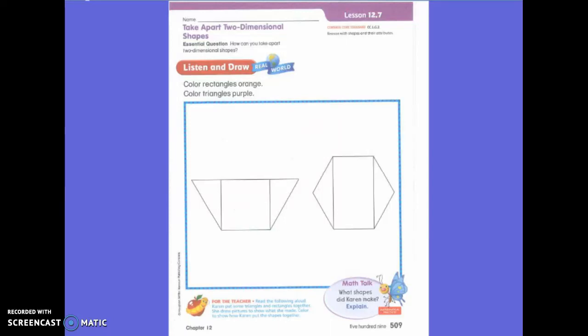In math, we've been working on putting shapes together to make new shapes. It's been kind of fun to be able to see new shapes form. So today we are going to be given a shape, but we're going to have to draw lines to see what shapes were used or put together to make that shape. Karen put some triangles and rectangles together. She drew pictures to show what she made, colored to show how Karen put the shapes together.